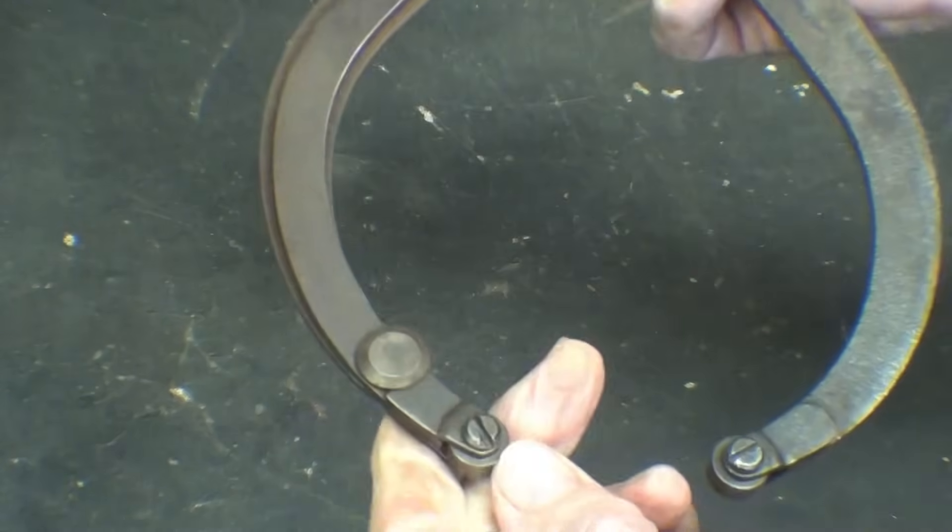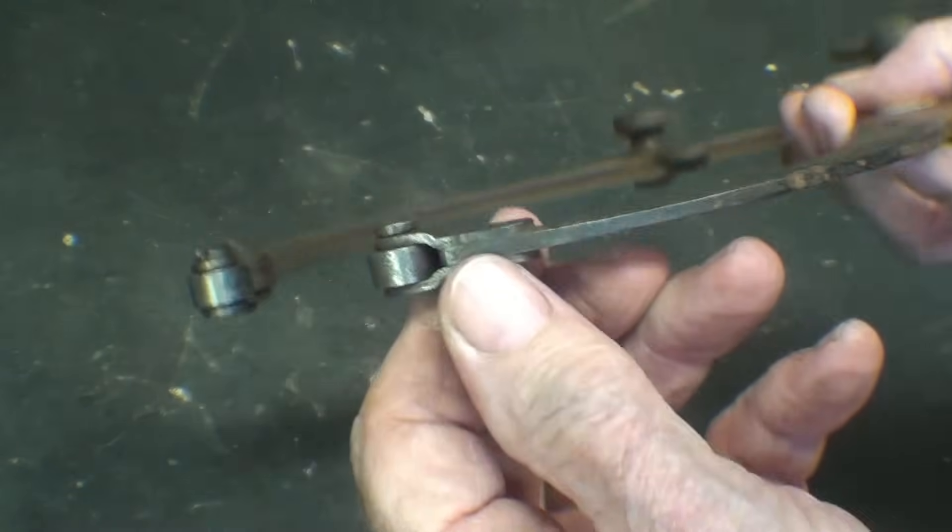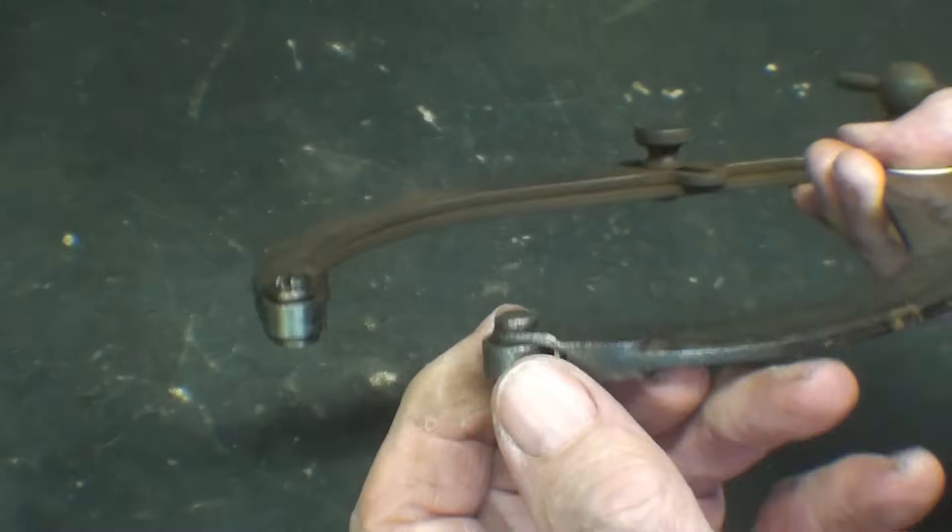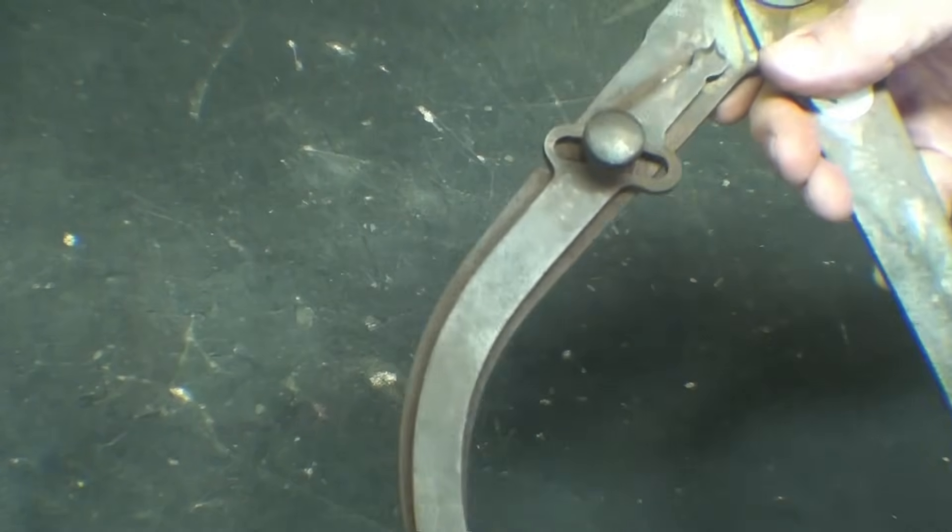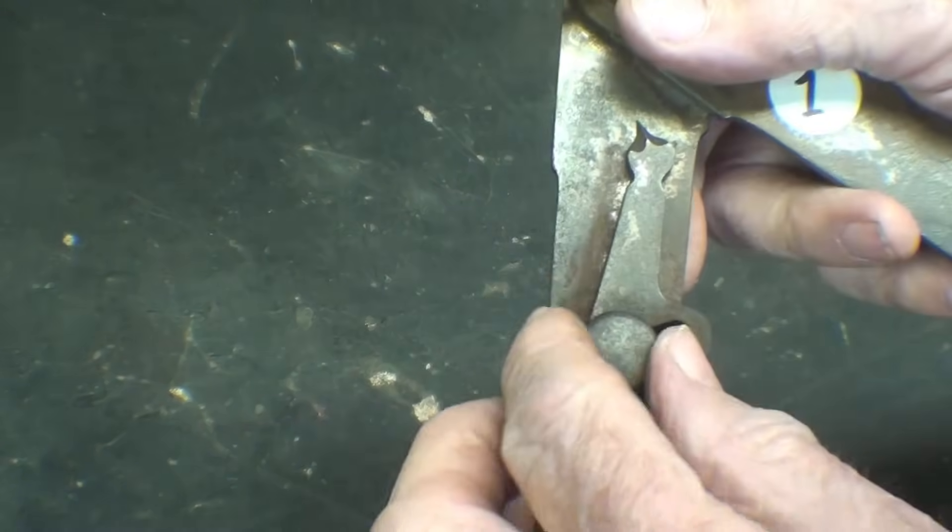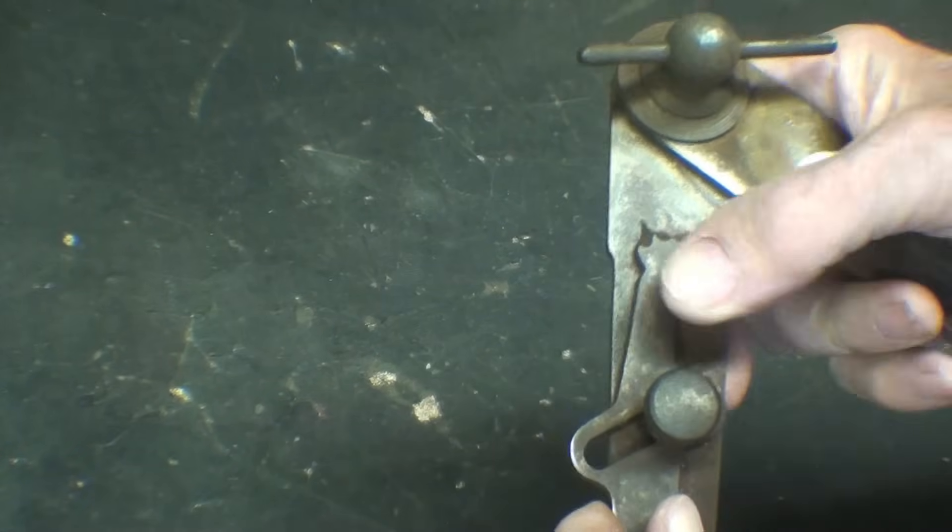But the unusual thing is that on this end there are some rollers and I assume these are just seized. Maybe I need to free them up a little bit. So they would roll. And the interesting part is this.